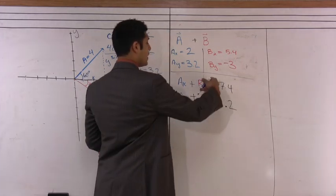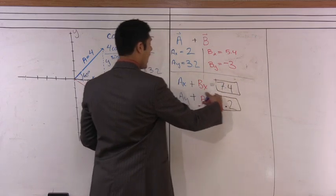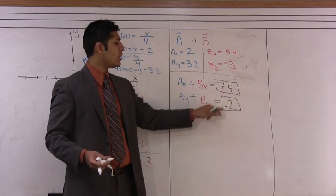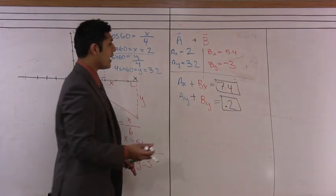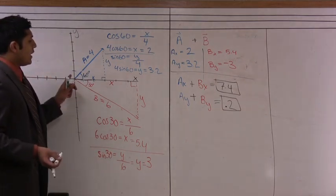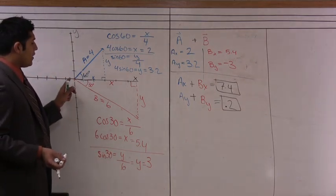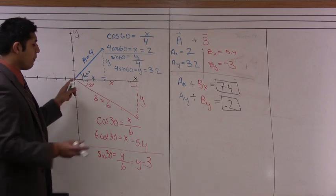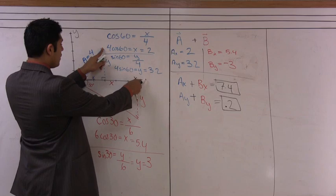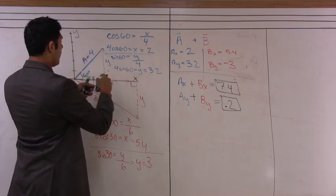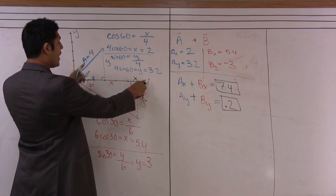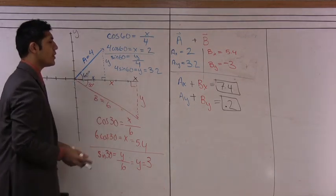So what this is saying is that my net vector, after I add up the components, should be 7.4 units long in the x direction. And only 0.2 units long in the y direction. So what should happen here is that if I were to do the head to tail method and draw vector b off of the head of vector a, you can see that our net vector would be somewhere where the x component would be 7.4 units long and the y component would be only 0.2 units long.